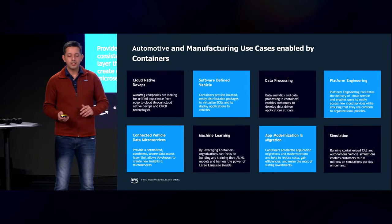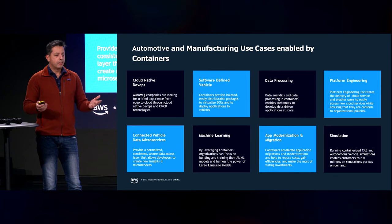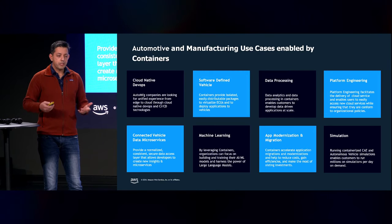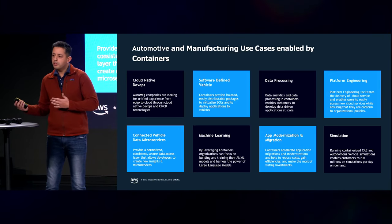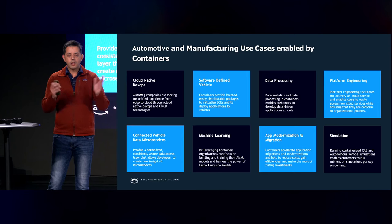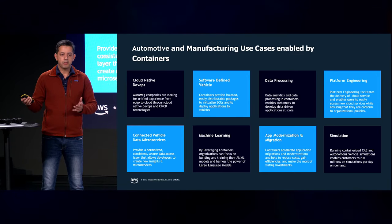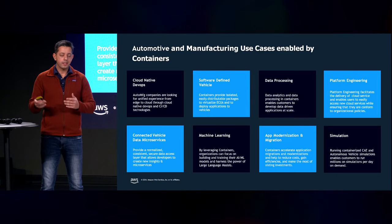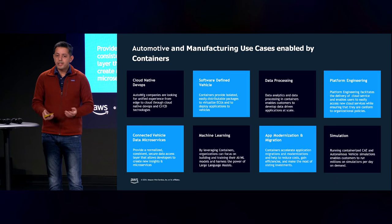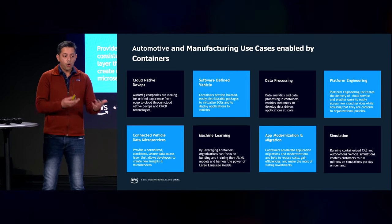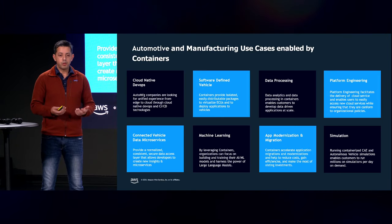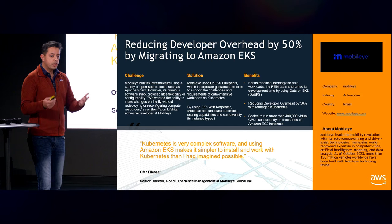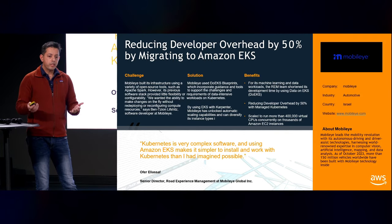Some things we've seen customers do on Kubernetes — at this point there is not a workload that doesn't fit. Six years ago there were things you shouldn't do with Kubernetes; that column doesn't exist anymore. Customers are running everything from microservices to complex machine learning and AI workloads. Companies building AI — like OpenAI, the team that built GPT-4, and Anthropic — built and trained their models on top of Kubernetes.